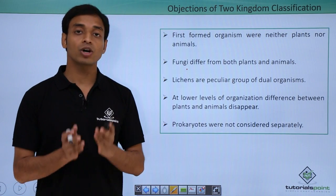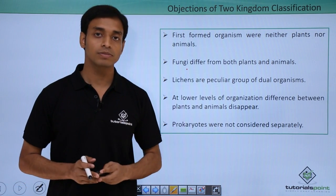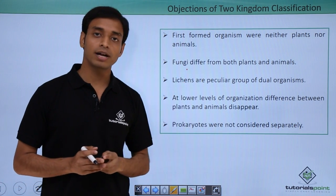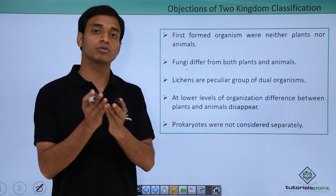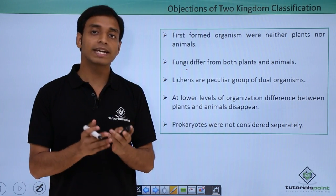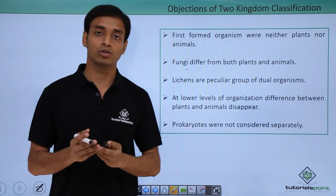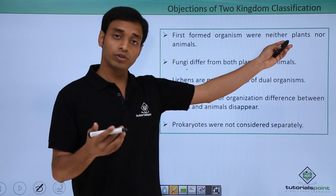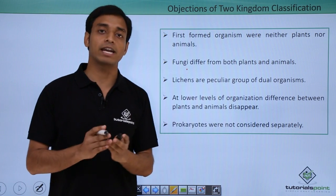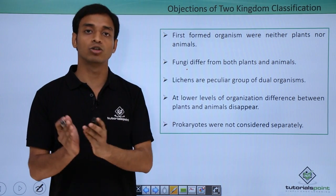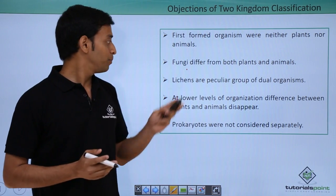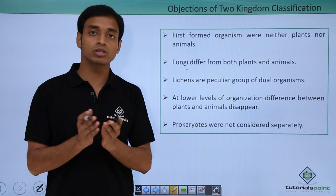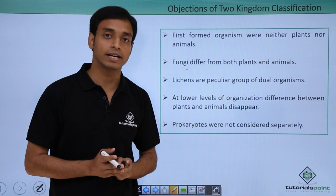Now let us look at some of the objections to the two kingdom system of classification. First, the earliest organisms were neither plants nor animals — they cannot be placed in either group, as they share characteristics of both plants and animals. Additionally, fungi, which is very different from both plants and animals, was incorrectly considered in the group of plants.